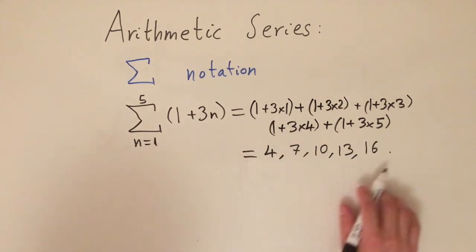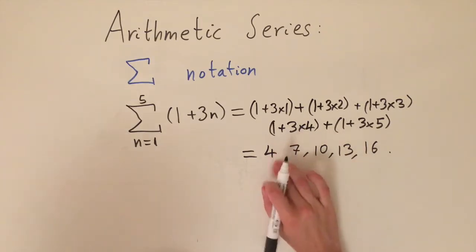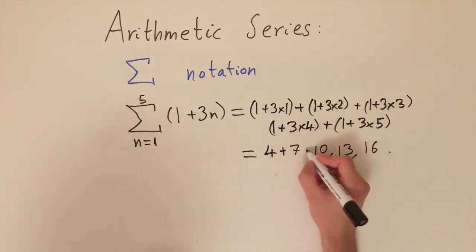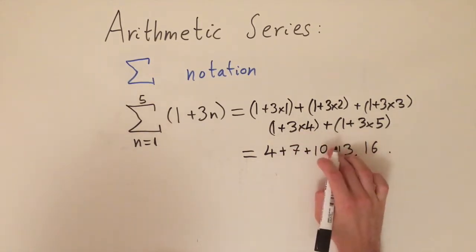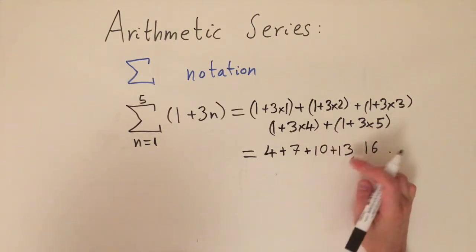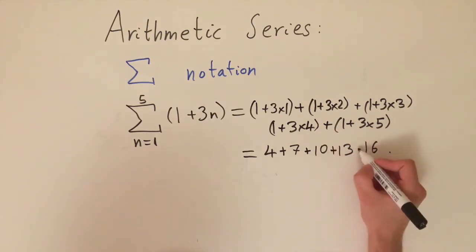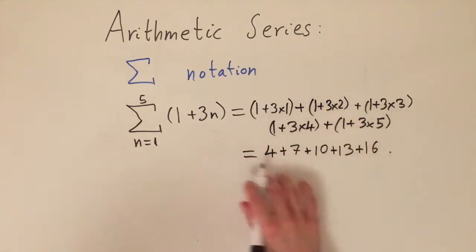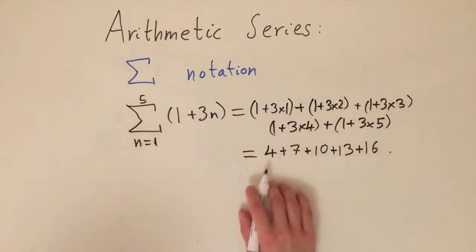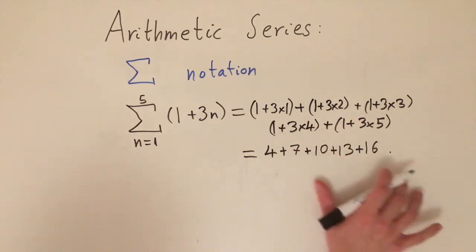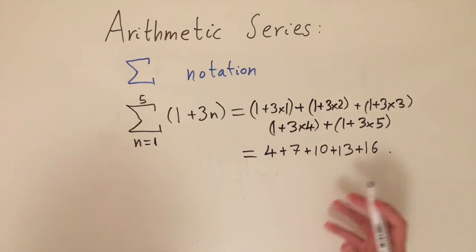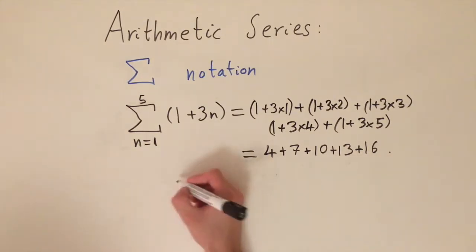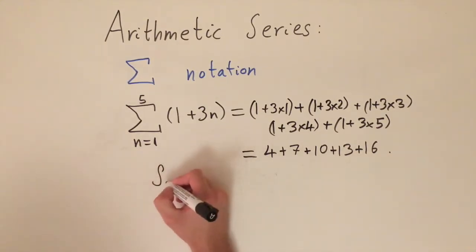We should put pluses between the numbers because it is a series, not a sequence. So the decoded series is 4 + 7 + 10 + 13 + 16. Now we can ask what this series actually adds up to, using the formula for the sum of n terms of an arithmetic series.